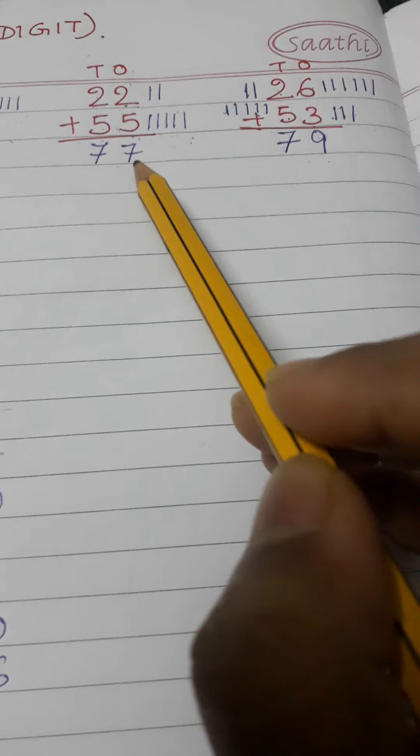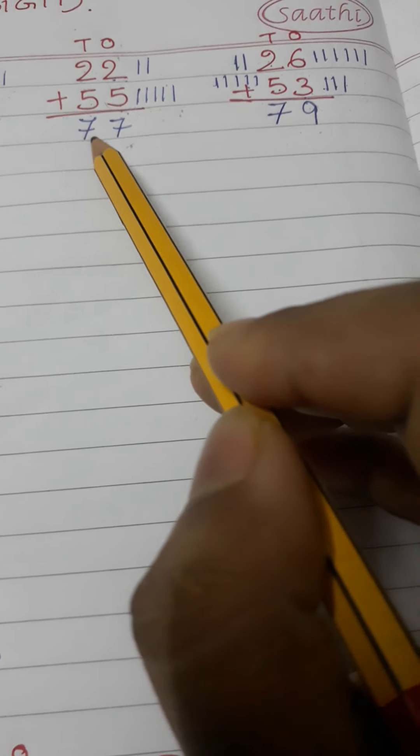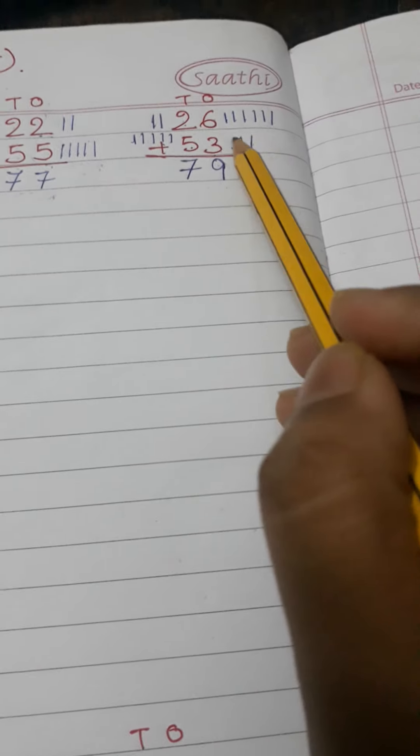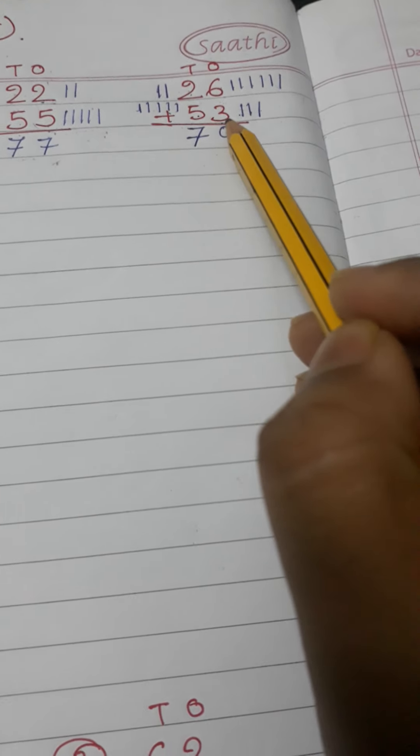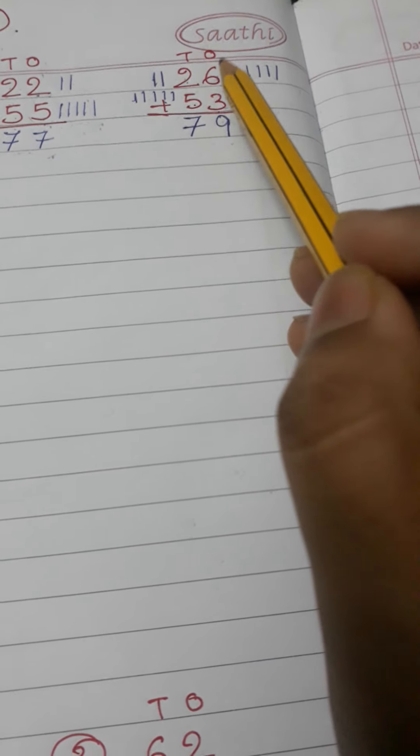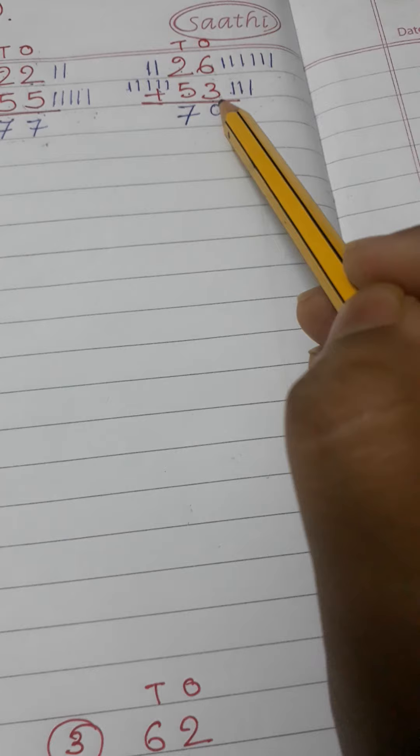So altogether I have seven. Two plus five makes seven. Six plus three: twenty-six plus fifty-three. First with ones: six means six sticks, three means three sticks. Six plus three makes nine.